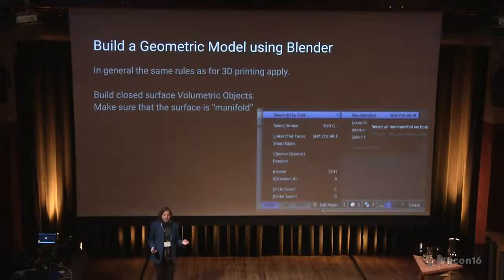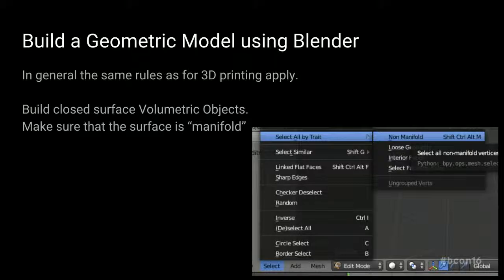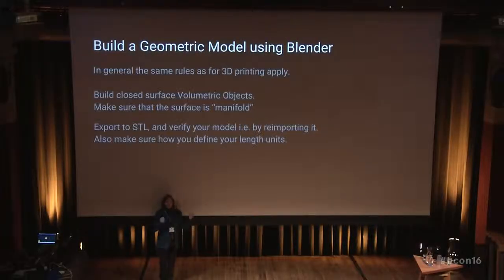Building the geometric model: in general, if you want to do computer-aided engineering, you do the same thing as for 3D printing. You want whole models that are physically correct — you can't just put a surface somewhere and hope it works. You need a volume that is closed and manifold. Once you have this volume, you export your object to STL, and you verify your model by re-importing it. One important thing in engineering is to get your units right — make sure all files use the same unit, because most of these files don't actually store the units, so you don't know if the STL is in millimeters or centimeters.